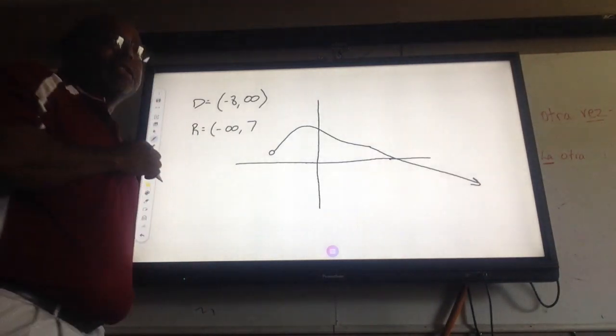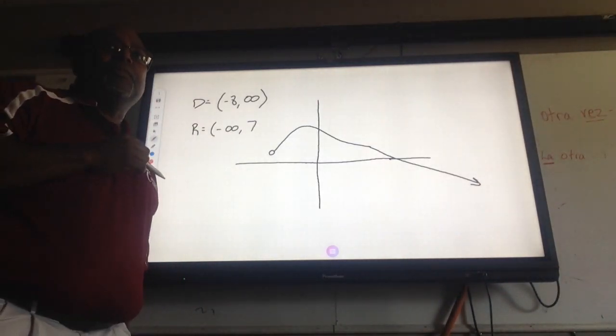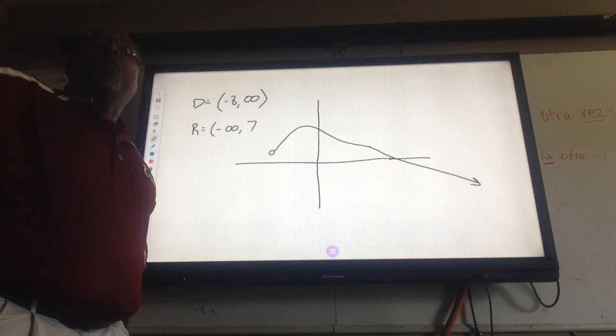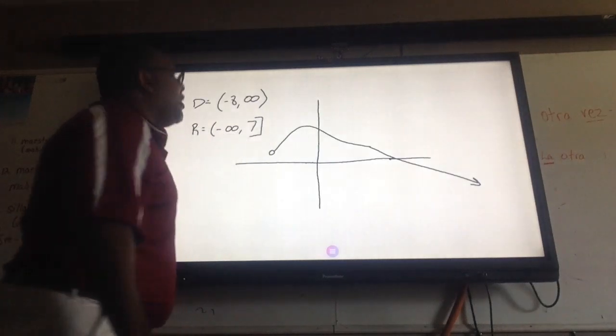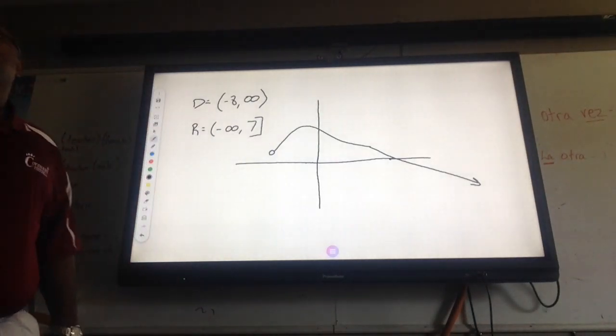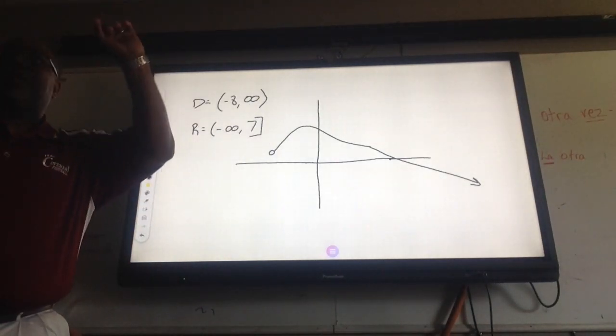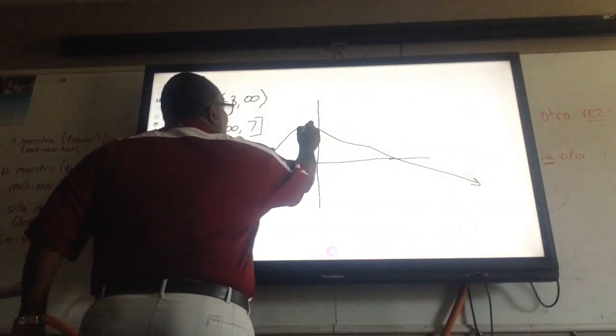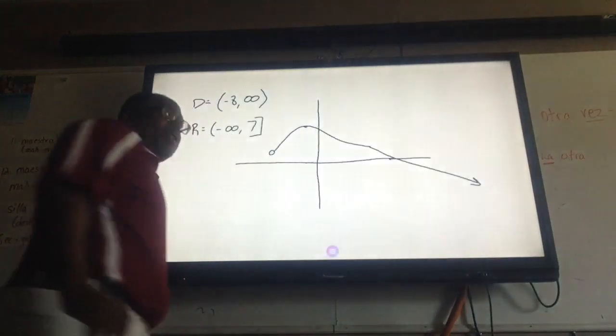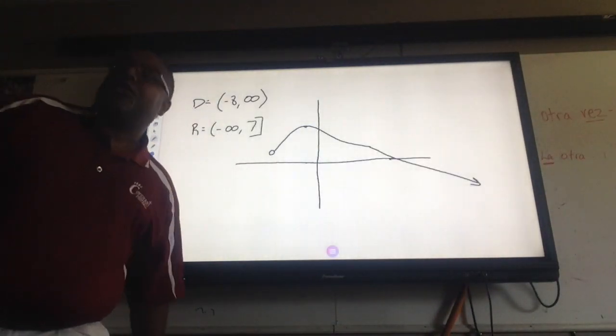Now, is it a bracket or a parenthesis? A bracket. A bracket on 7. Why is it a bracket? It only falls on the 7 on the y-axis. So it could be 7. It's a bracket, but why is it a bracket? Because it could be 7. Because it actually touches the 7. It actually touches 7. So since it actually touches 7, 7 is included. So that's why it's a bracket.